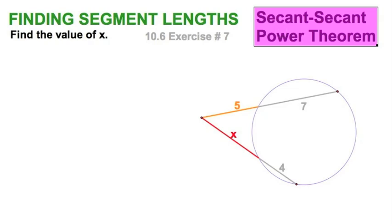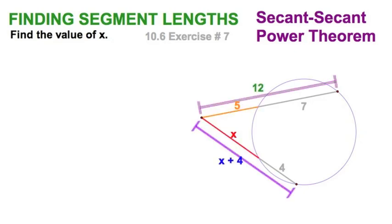Now, we'll do another secant-secant power theorem, and this time, we're going to generate a quadratic. Yes, you only see one x here, but watch what happens. Remember, we take the exterior portions, the red and the orange here, we need to multiply them by the entire secant, the blue and the green.